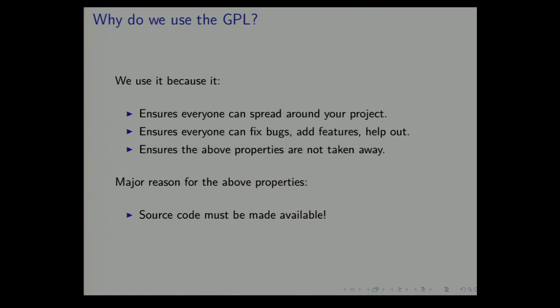There are other licenses — for example a BSD license or maybe even a Creative Commons BY license — that allow you to take a work, modify it, and give the result, but not give the original sources back to the community. The reason we have these properties under the GPL is that the source code must be made available.